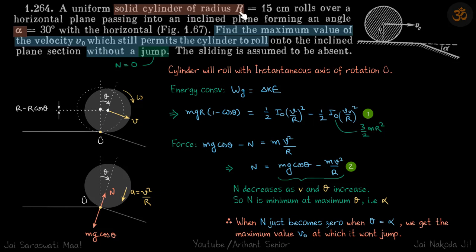A solid cylinder of radius r is rolling down a horizontal plane and then comes a bend at angle alpha. We need to find the maximum value of v₀ which still permits the cylinder to roll without jumping. We don't want the cylinder to break contact, meaning we don't want the normal reaction N to become zero. So we find the maximum v₀ at which N just becomes zero.